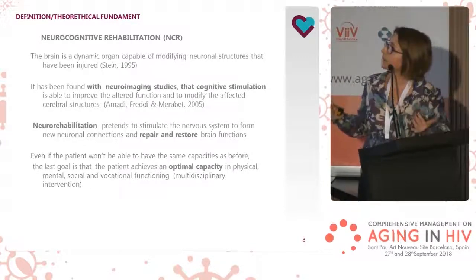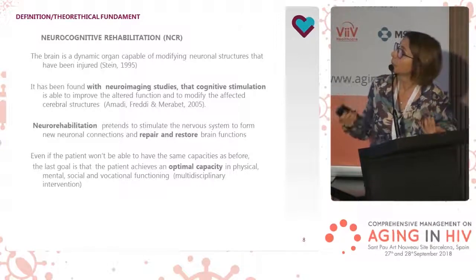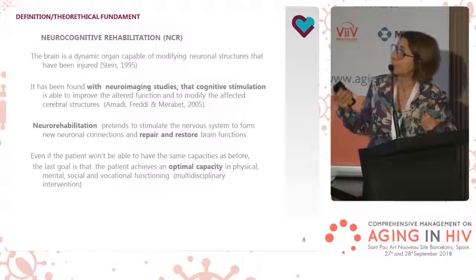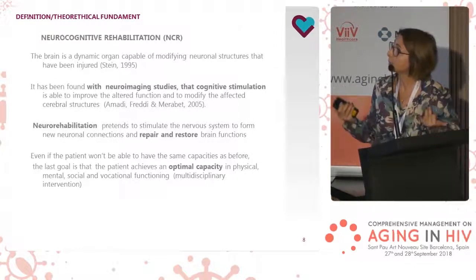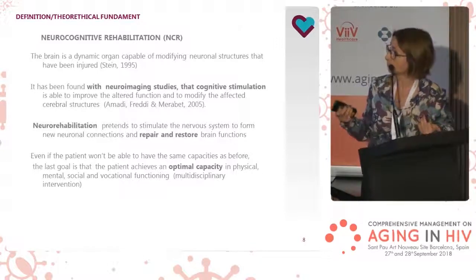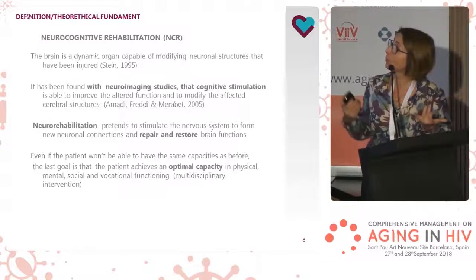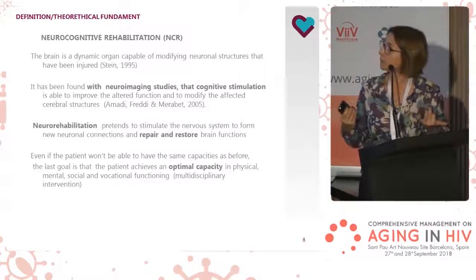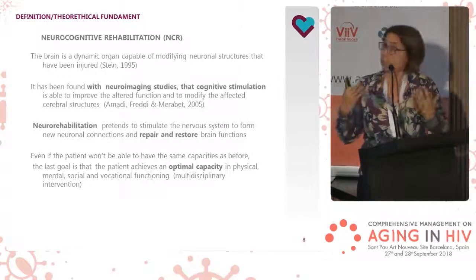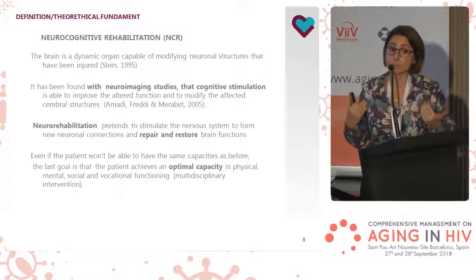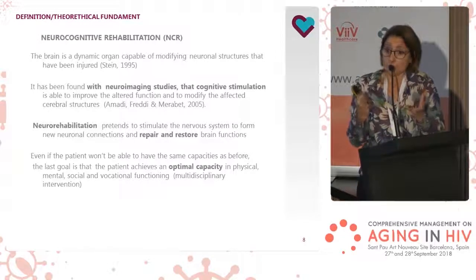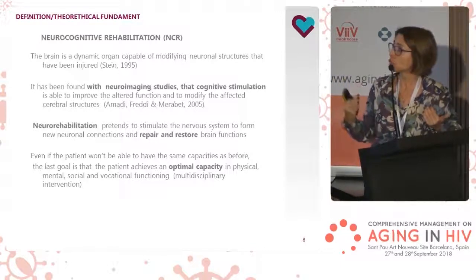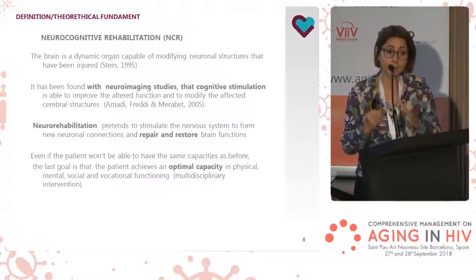The brain is a dynamic organ capable of modifying neuronal structures that have been injured. Studies have found that cognitive stimulation is able to improve altered functions and to modify affected brain structures. Neurorehabilitation aims to stimulate the nervous system to form new neuronal connections and repair and restore brain functions. Even if the patient won't achieve exactly the same capabilities as before, the goal is for the patient to achieve optimal capacity in physical, mental, social, and vocational functioning. Multidisciplinary intervention is very important in these cases.